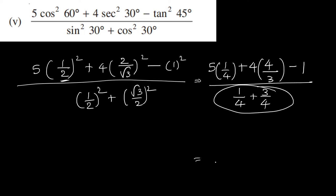So denominator value is 1. 5 into 1 by 4 is 5 by 4, plus 4 into 4 by 3 is 16 by 3, minus 1. LCM of 4 and 3 is 12.